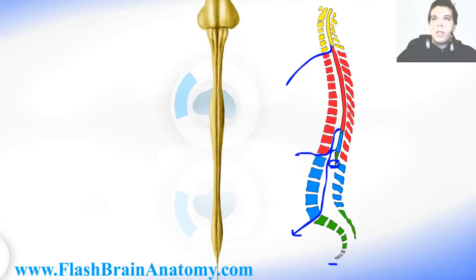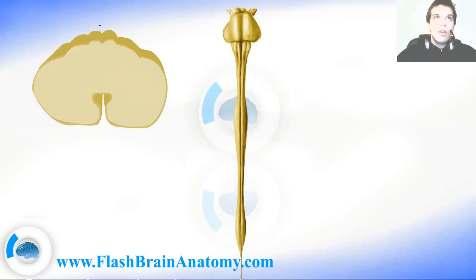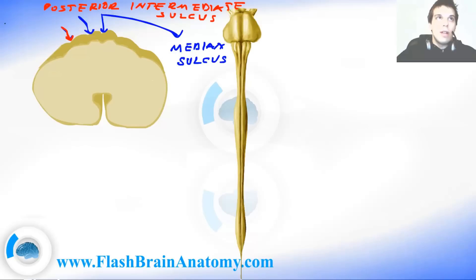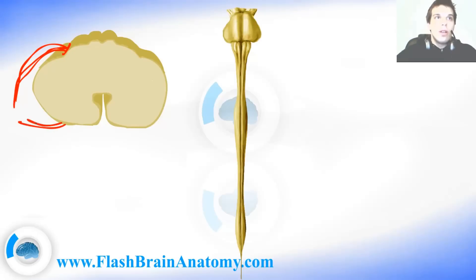You should know that the medullary cone — where the spinal cord ends — should reach the level of the second lumbar vertebra. Looking at the cross-section of the cervical segment, at the back you can see the median sulcus, next to it is the posterior intermediate sulcus, and more lateral is the posterolateral sulcus. This posterolateral sulcus is very important because the posterior roots of the spinal nerves emerge here, then join the anterior roots to form the spinal nerve.